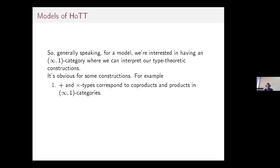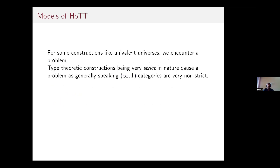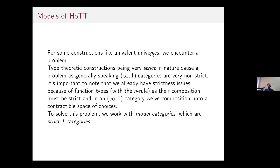For a model, we want an infinity-one category where we can interpret type-theoretic constructions. Product and co-product types correspond to products and co-products in infinity-one categories; Pi types correspond to local Cartesian closure; the natural number type corresponds to the natural number object. But for constructions like universes we encounter a problem: type-theoretic constructions are strict, while infinity-one categories generally are not. Even function types with the eta rule require strict composition, whereas in an infinity-one category composition is only defined up to a contractible space of choices.